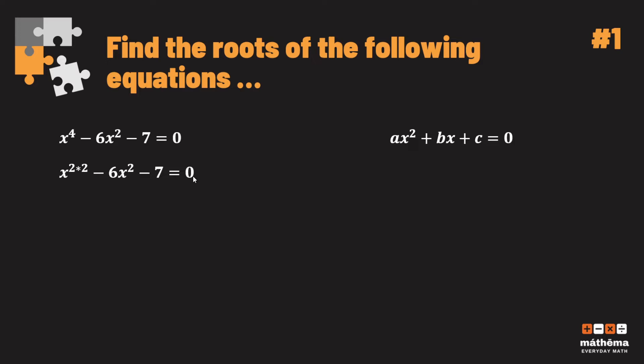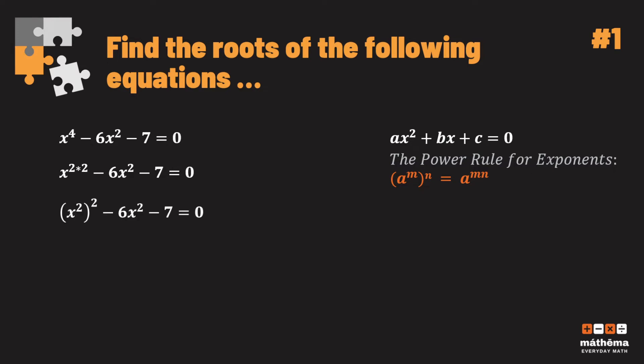According to our rule of exponents, a^m raised to the power of n equals a^(mn). So we can rewrite this as (x²)² minus 6x² minus 7 is equal to zero. Let's assume that u is equal to x², then substitute all x² with u, giving us u² minus 6u minus 7 is equal to zero. We now have a quadratic equation and can apply the different methods to find its roots.